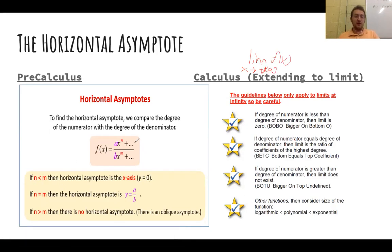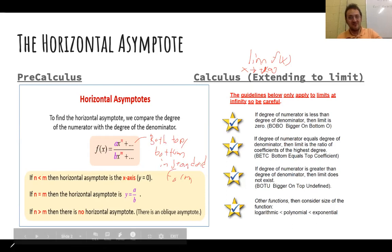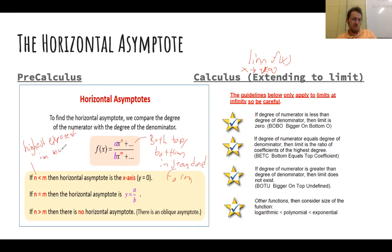So in pre-calc, you want to make sure that both the top and the bottom are in standard form. And we have rules. And rather than subject you to my handwriting, I have the rules written out here. You can see them side by side. So this says that if the degree in the numerator, so like the highest exponent in the numerator, is less than the highest exponent in the denominator, the horizontal asymptote is the x-axis. In other words, y equals zero.